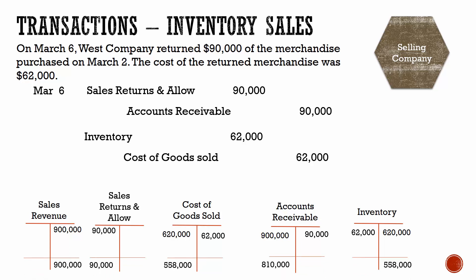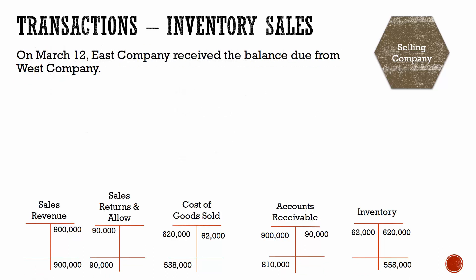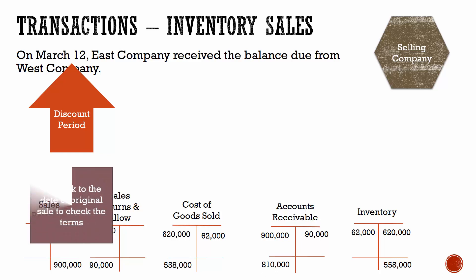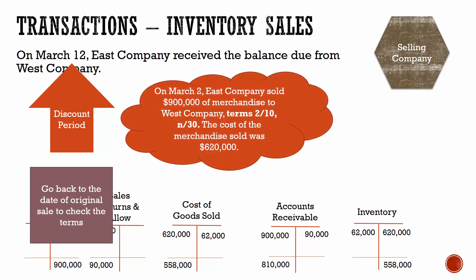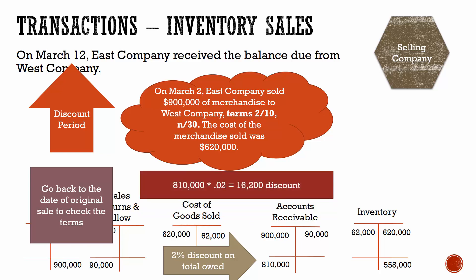Now we have the new balances for all these accounts. Next, on March 12th, East Company received payment on the balance from West Company. The first thing we need to do is check whether we're in the discount period. We received payment on March 12th, and the original sale was on March 2nd — that's 10 days, so we are within the discount period. Our terms are 2/10, n/30, so because they paid within 10 days, they receive a 2% discount. That discount is taken on the total amount they owe us, which is $810,000 because they returned some merchandise. The total discount is $16,200.